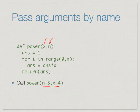We can even reverse the thing and say call power. I know that x is the bottom value, I know it is x to the power n, but I don't remember whether x comes first or n comes first. So I can say power n=5, x=4, and this will correctly associate the value according to the name of the argument and not according to the position.